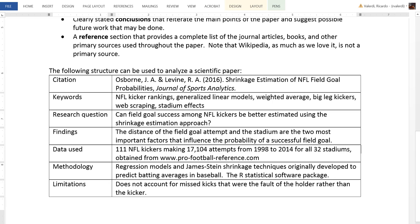The data used to do the analysis is also important to note. In this case, 111 NFL kickers over the time period of 1998 to 2014, making 17,104 attempts playing in 32 stadiums. Their source of data is a website called profootballreference.com, which is publicly available. One of the important aspects of a scientific study is that the data are made available so other people can replicate their results. The methodology includes regression models and the R statistical software package, which is the same one used in this class.